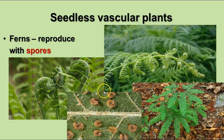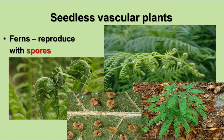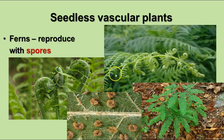When you see ferns described in literature they're often described as having lacy leaves. The leaf of a fern is called a frond and they reproduce by spores rather than seeds. The recognizable form of the fern is the sporophyte, which is diploid, and on the backs of the fronds they produce clusters of sporangia called sori.